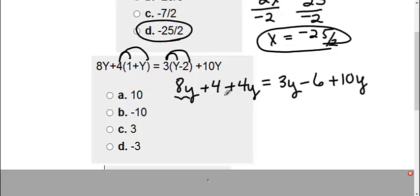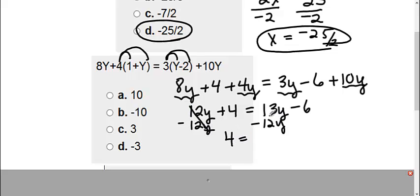Then I can combine my like terms. An 8y and a 4y gives me 12y. I still have my plus 4 equals a 3y and a 10y I can put together for 13y, and then my minus 6. My next step is to get my y's together, so I'm going to move this 12y. It's a positive 12y, so to move it, I'm going to subtract 12y on both sides. This side is gone. I have 4 equals 13y minus 12y, which is just a 1y, and I still have minus 6.